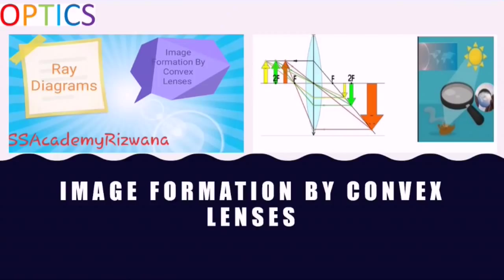Welcome to my channel. Today we will study image formation by convex lenses. We will make use of ray diagrams to study these image formations. We will also place objects at different places on the principal axis to see how the image formed is different in each case.